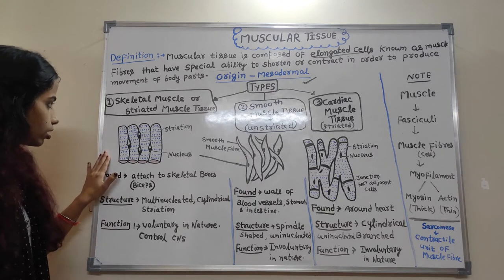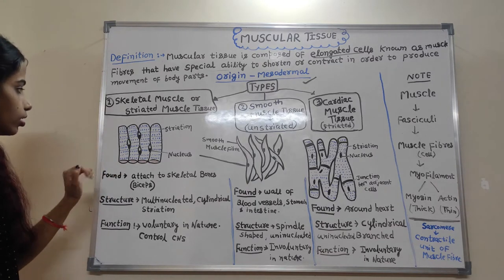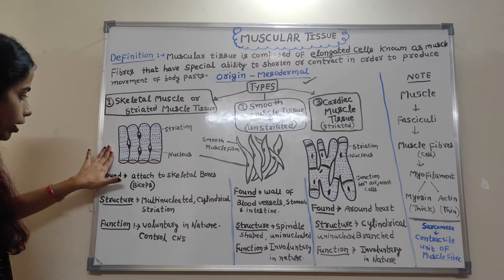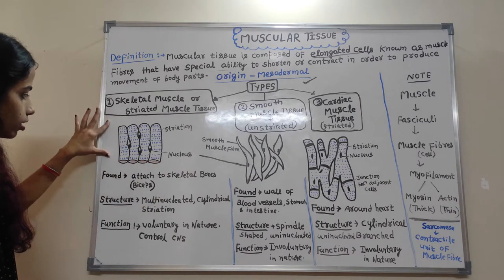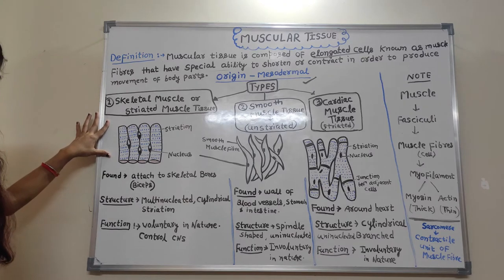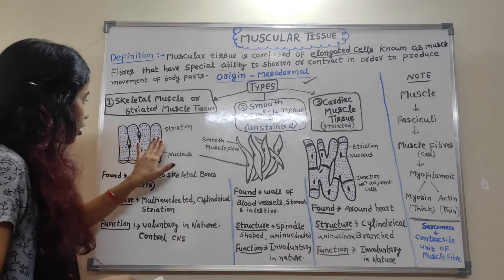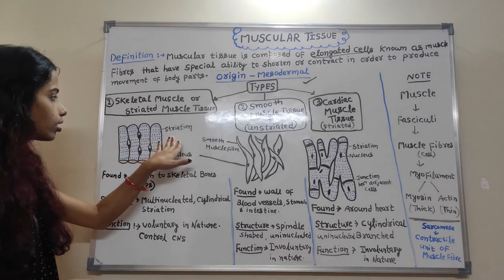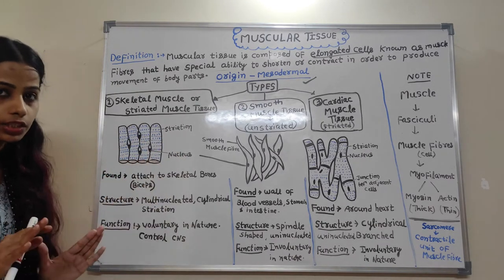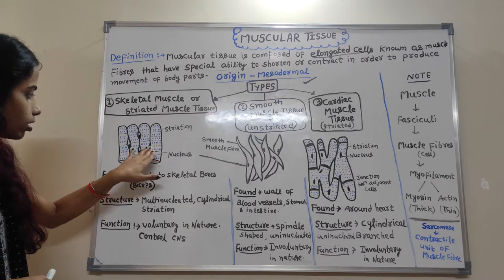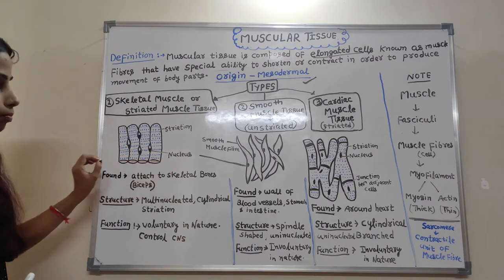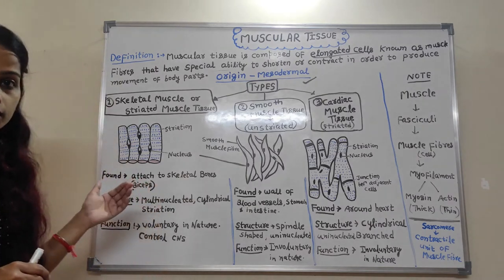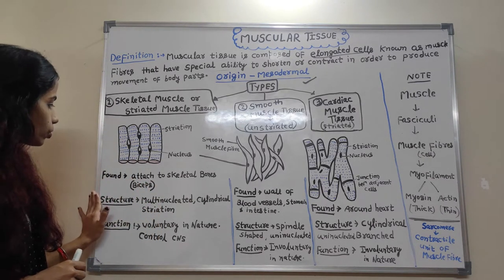If we see the structure of skeletal muscle, it looks like elongated cells are present. The structure is cylindrical, and there are striations present — striations means dark and light bands are present. The nuclei are multiple in number, meaning skeletal muscle tissue is multinucleated.